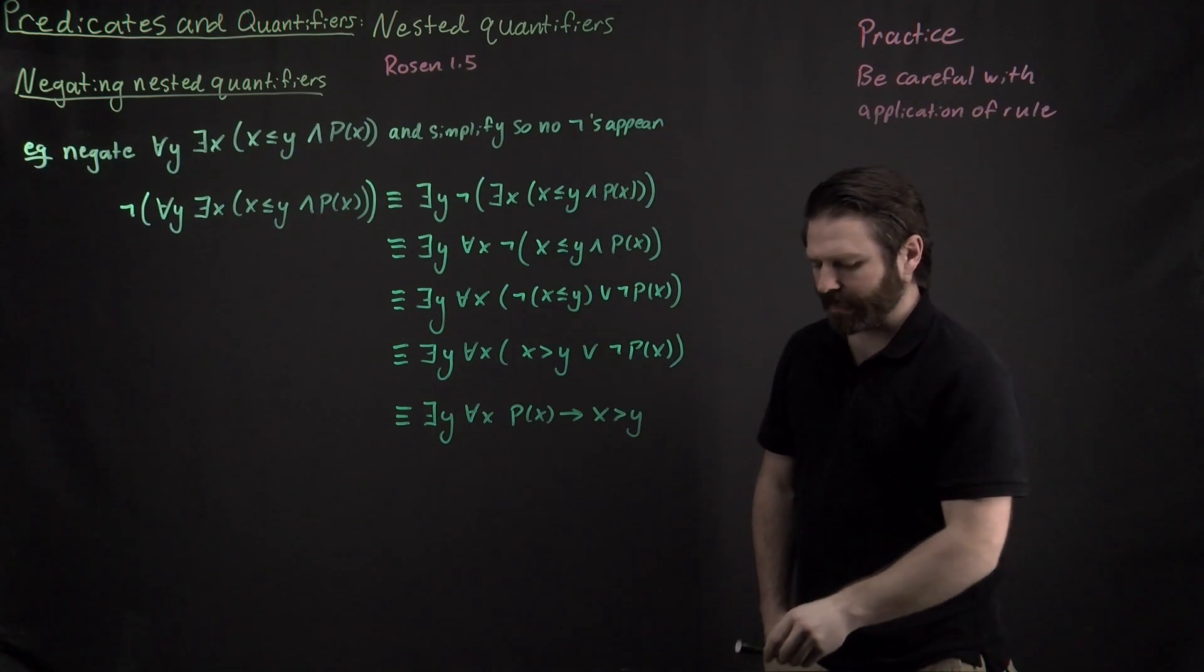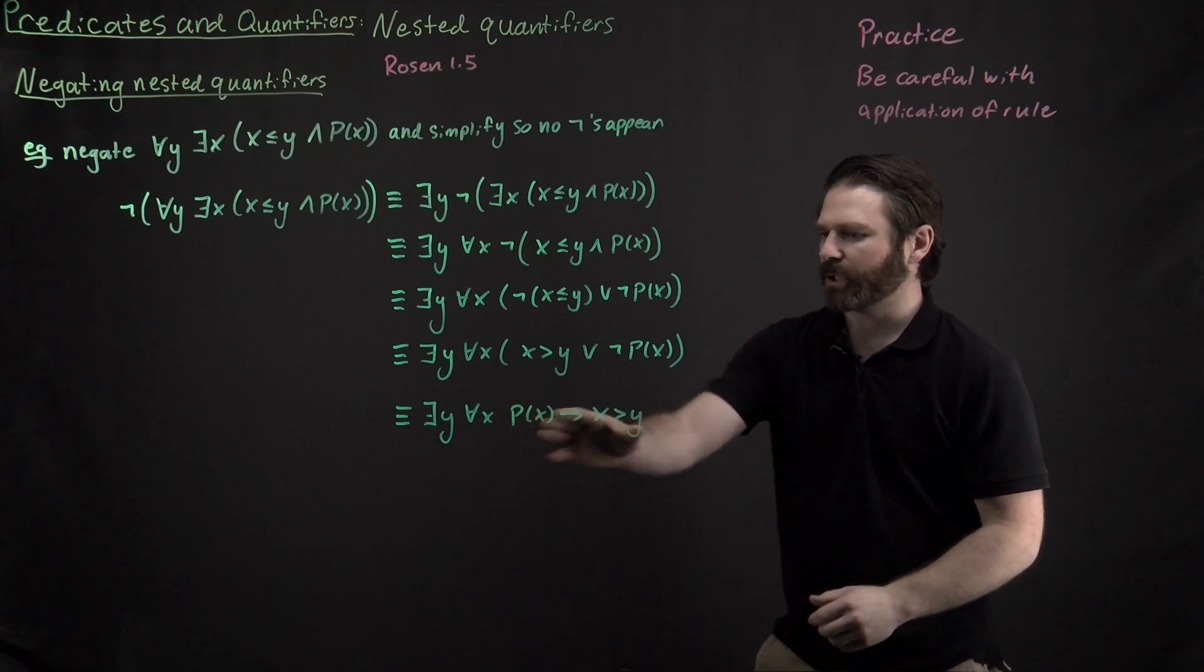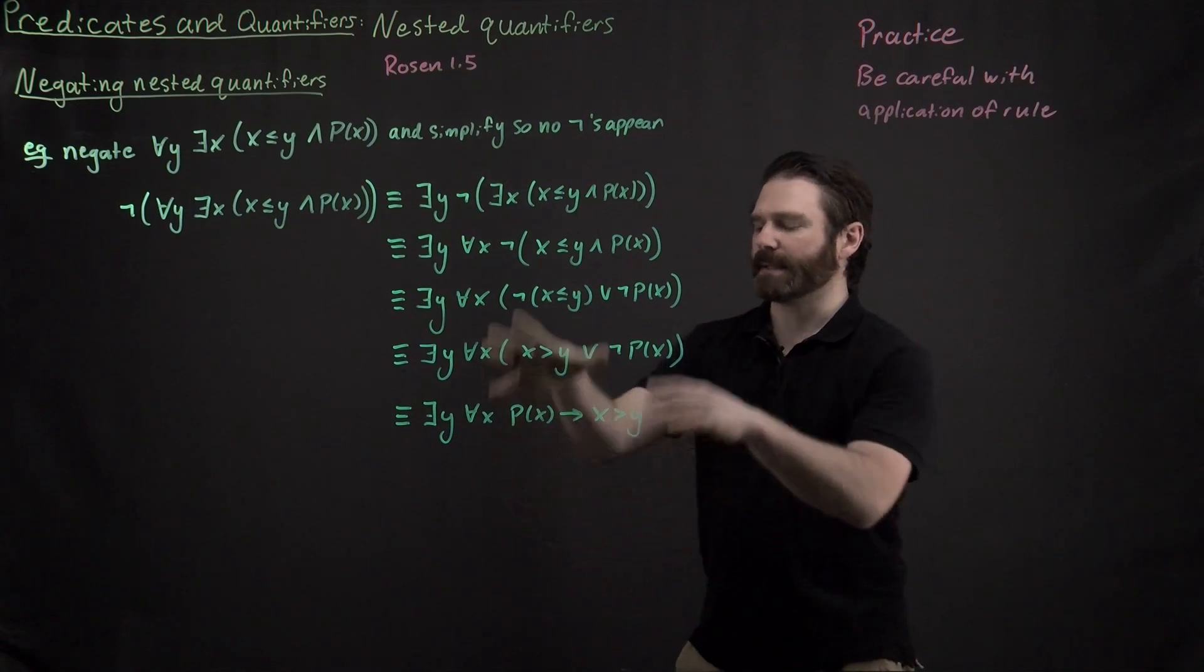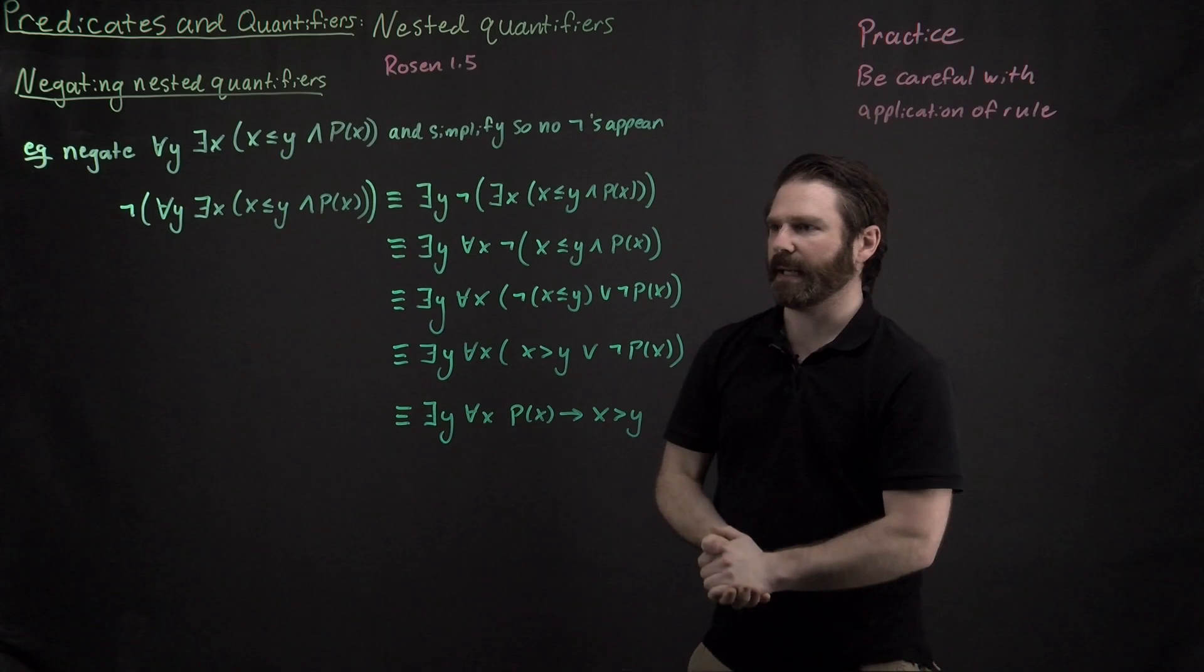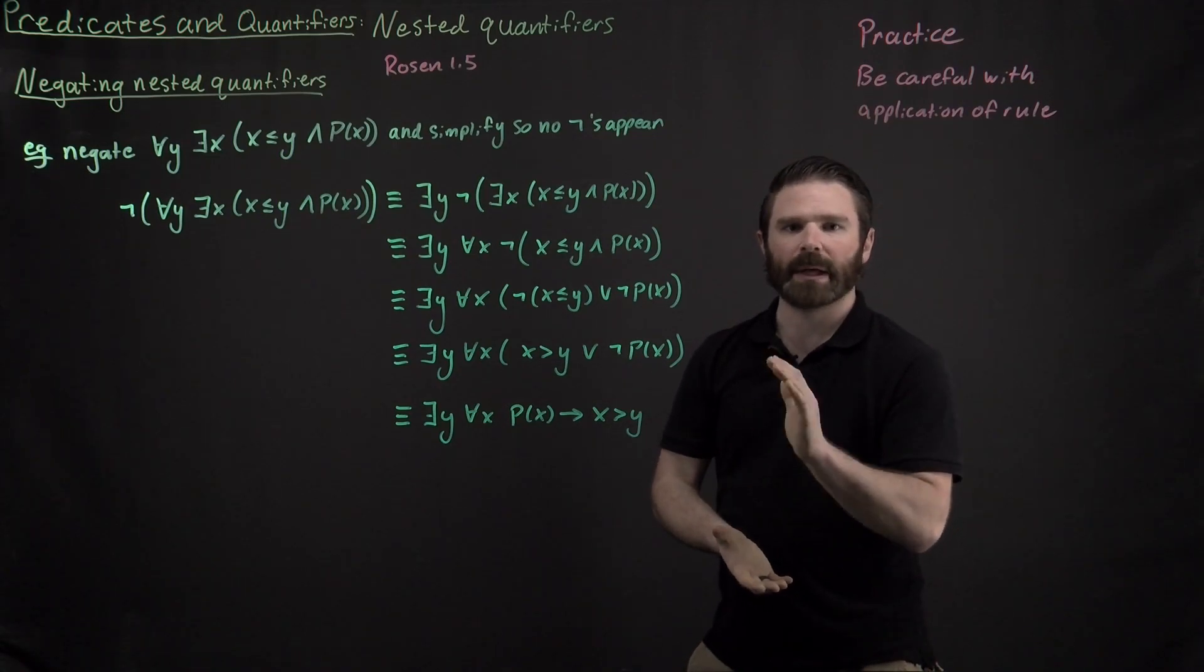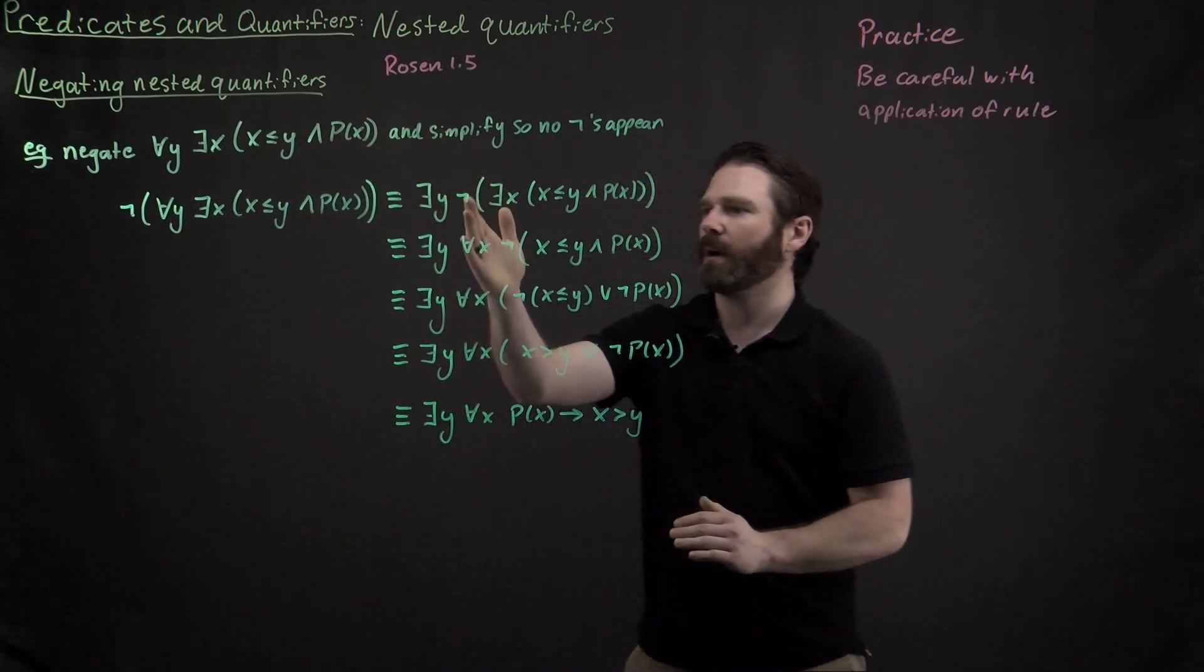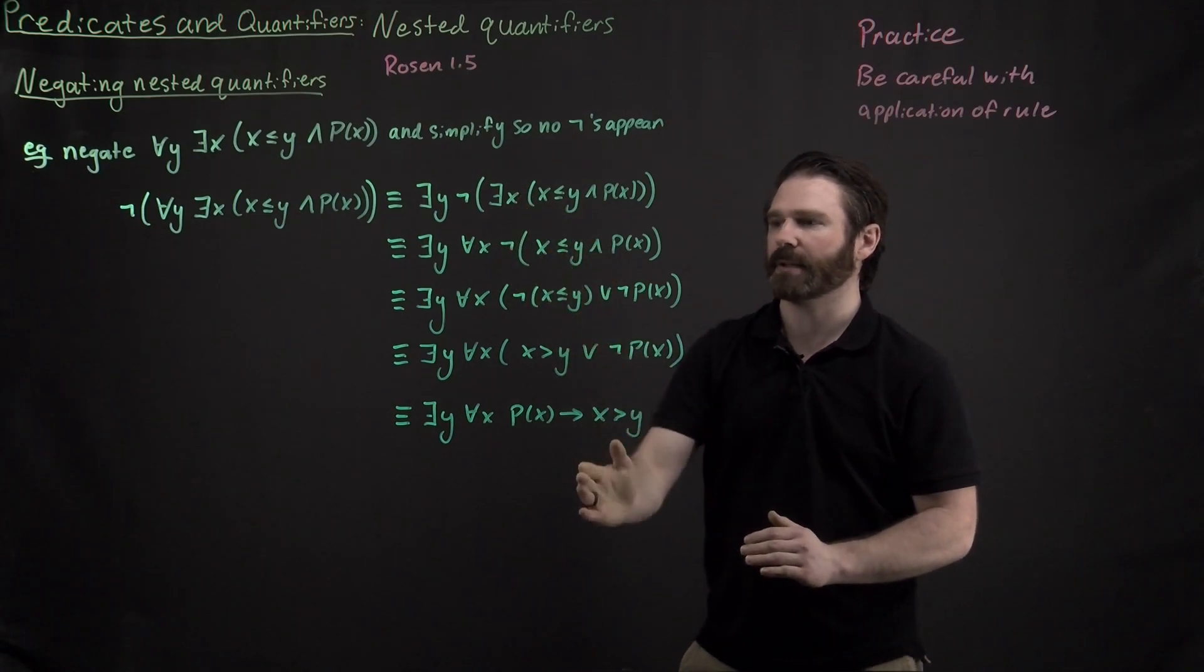Recalling the definition of my implication, I have now been able to negate this statement right here and simplify that so that no nots appear inside of it. So you can see how I took this step by step and I went slow. I went slow to make sure that I applied DeMorgan's law correctly in the first step and then applied DeMorgan's law correctly in the second step, etc, etc, etc.